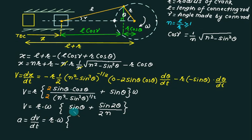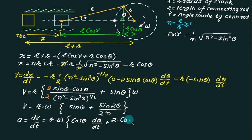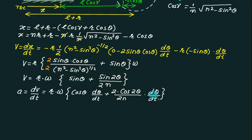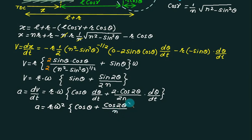Differentiating velocity to get acceleration: the derivative of sin(θ) is cos(θ), and the derivative of sin(2θ) is 2·cos(2θ), giving another factor of dθ/dT which is omega. So the acceleration equals R·omega² times [cos(θ) + cos(2θ)/N]. This is the final equation of acceleration, consisting of two parts: the first term involving cos(θ) and the second term involving cos(2θ).